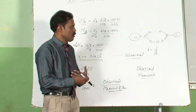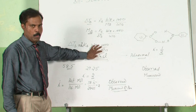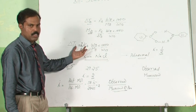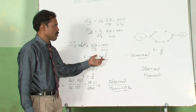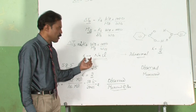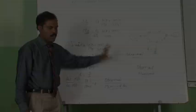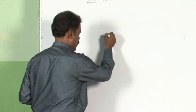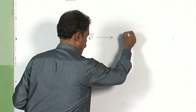The next obvious question is: what if the electrolyte is not strong? How would you calculate the value of i? Let us discuss that. Let us assume there is a substance AB that dissociates to form A⁺ and B⁻. Let us assume that this is a weak electrolyte.